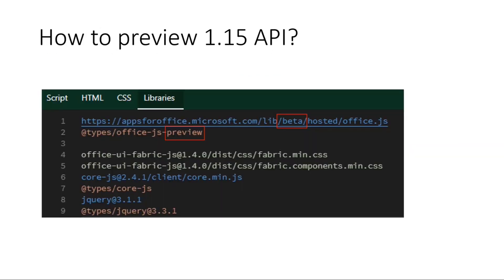So how do you use these new APIs while they're in preview? First, you need to change your CDN reference from 1.1 to beta — this will get you the new stuff. And then if you want IntelliSense, reference the @types/office-js-preview. This screenshot is from ScriptLab, so you can use these today in ScriptLab and test that out there.